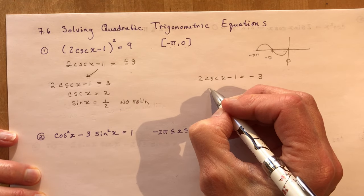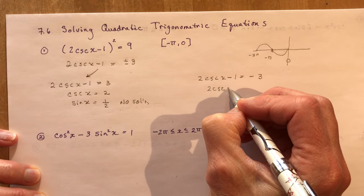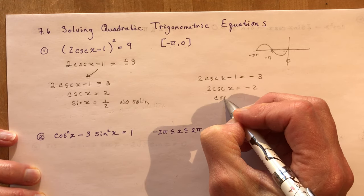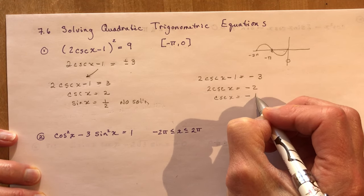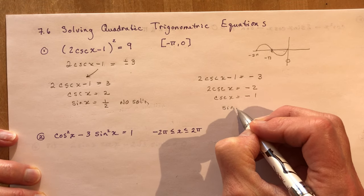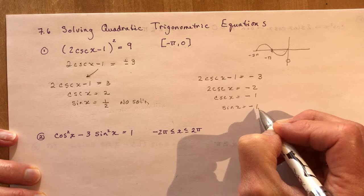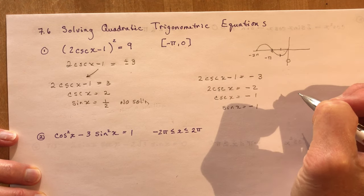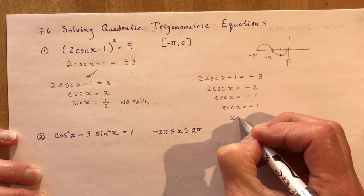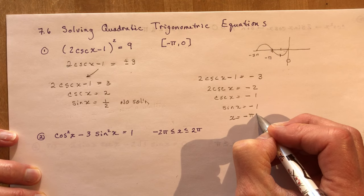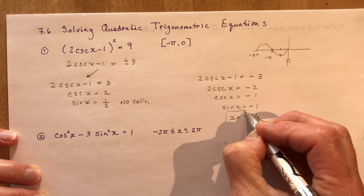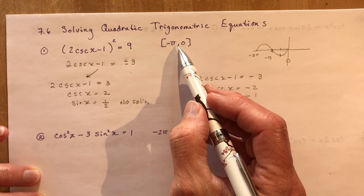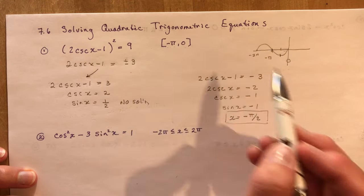Going to the second equation, we get 2 cosecant x equals minus 2, so cosecant x equals minus 1, or sine x equals minus 1. As you can see by the graph, there's only going to be one solution, and that would be x equals minus pi over 2. That's the only solution, and remember we're looking at the interval between minus pi and 0.